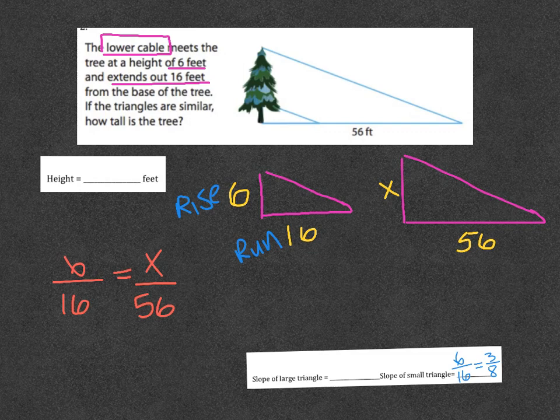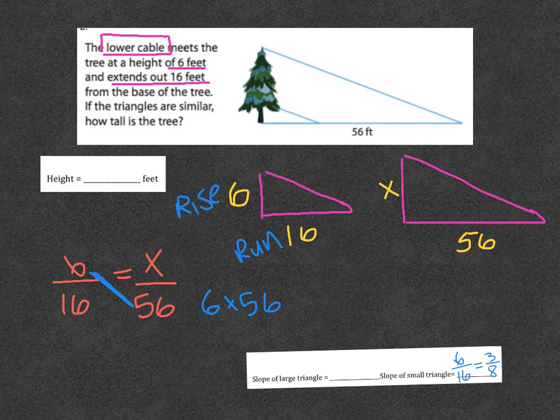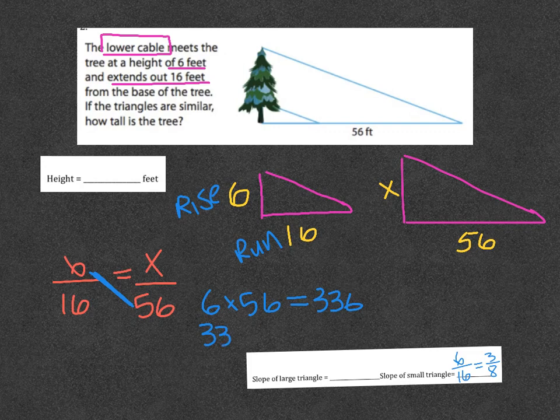6 times 56 equals 336, and then 336 divided by 16 is 21.